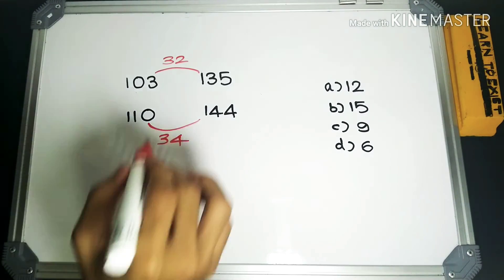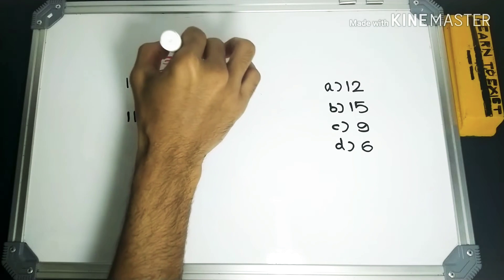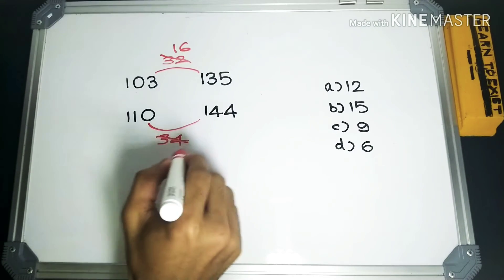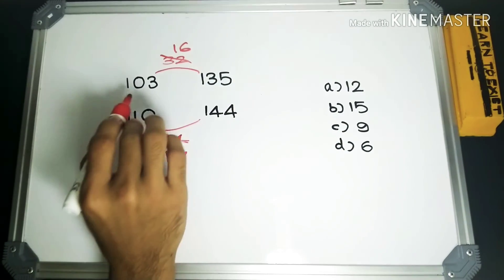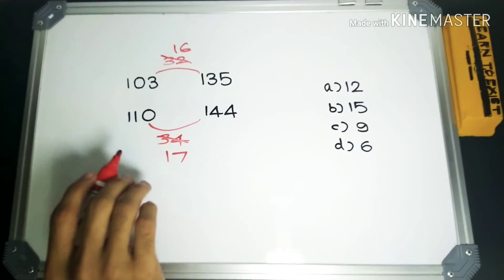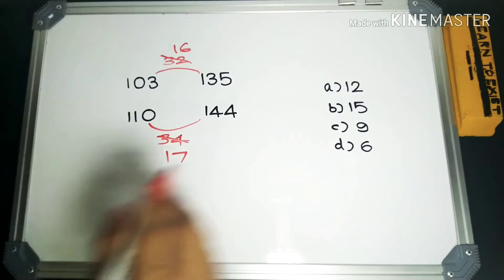Now if we take the ratio, this would reduce to 16 is to 17. We are looking for a number that when added with these four numbers is going to make them in continued proportion.